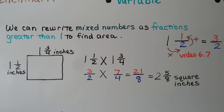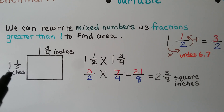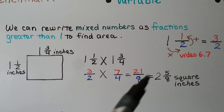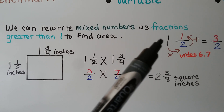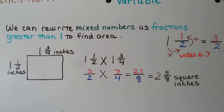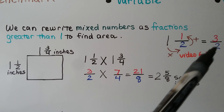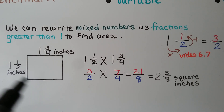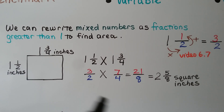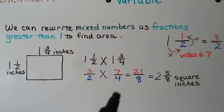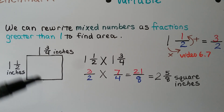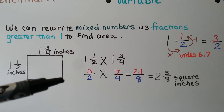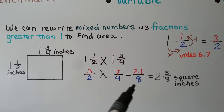We can rewrite mixed numbers as fractions greater than one to find area. This side is one and a half inches, and this side is one and three fourths inches. We need to multiply one and a half times one and three fourths. We learned in video 6.7 that we can take the whole number and multiply it to the denominator: one times two is two, then we add the numerator — that's three — giving us three halves. We do that with the other mixed number: one times four is four, plus three is seven, giving us seven fourths. Now we multiply three halves times seven fourths: numerators give us 21, denominators give us eight — we have 21 eighths, which simplifies to two and five eighths square inches.